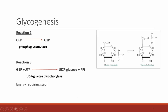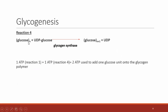In reaction 4, the UDP-glucose from the prior step is added onto an existing glycogen molecule — depicted as glucose with an N subscript representing any number of glucoses in the chain. This is done by the important enzyme glycogen synthase. The glucose from UDP-glucose is added onto the glycogen molecule, extending it by one glucose residue, and the UDP is released.